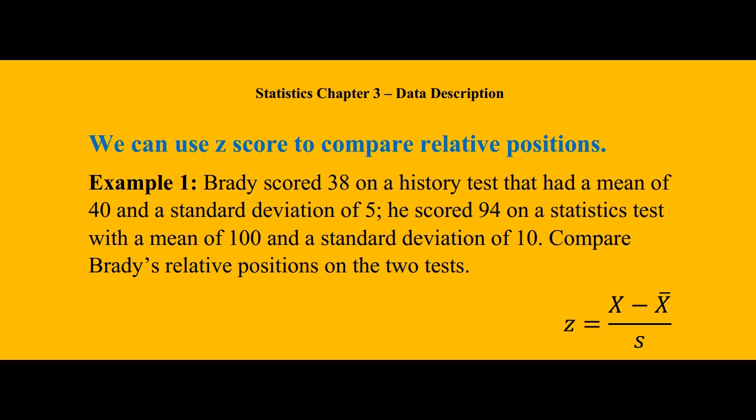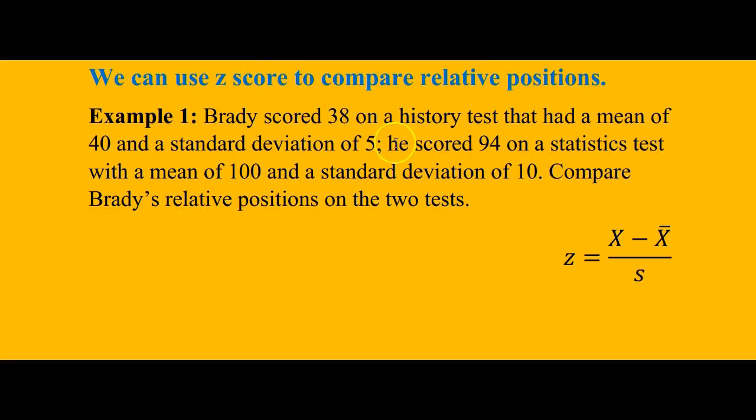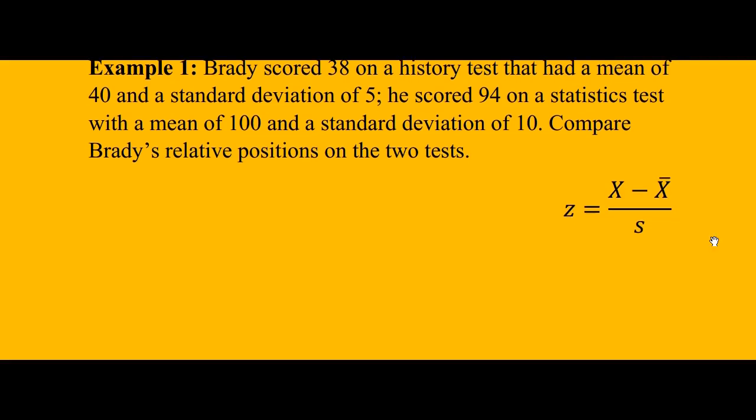Example one: Brady scored 38 on a history test that had a mean of 40 and a standard deviation of 5. He scored 94 on a statistics test with a mean of 100 and a standard deviation of 10. Compare Brady's relative positions on the test. We don't really know, because a test can be easy or it can be hard. Regardless of if he has 38, we don't know what other people got on the test and we don't know if he's the highest score or the lowest or somewhere in the middle. So we need to calculate this score based on the mean and the standard deviation.